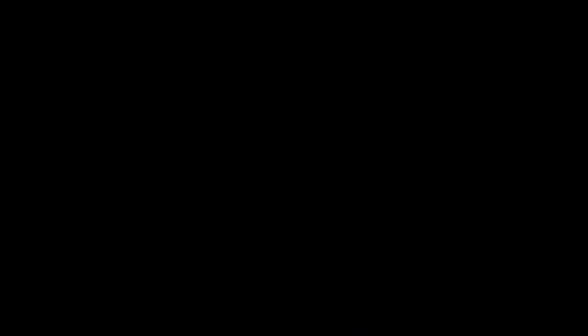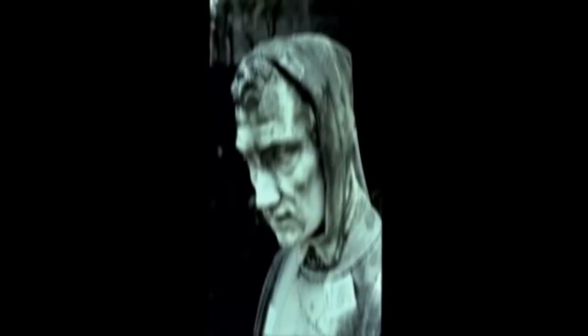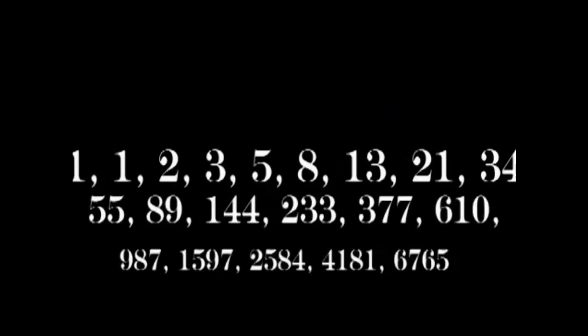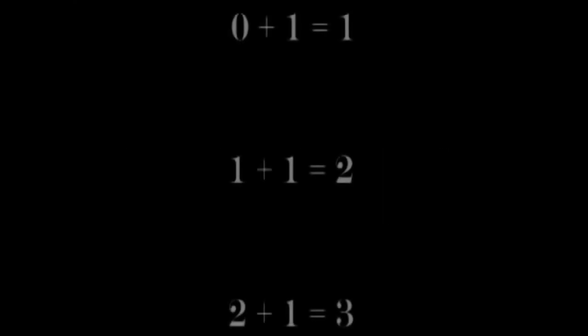Around 1200 AD, a man named Leonardo Pisano, better known as Fibonacci, discovered a sequence of numbers that created a very interesting pattern. The sequence begins with the numbers 1, 1, 2, 3, 5, 8, 13, 21, 34, and continues indefinitely. Each number is obtained by adding the last two digits together.